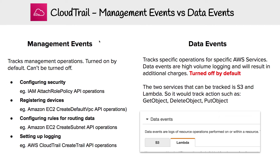There are different types of events in CloudTrail: management events and data events. Generally, you're always looking at management events, because that's what's turned on by default. There are a lot of those events, so I can't really list them all out here, but I can give you a general idea of what those events are across four categories.